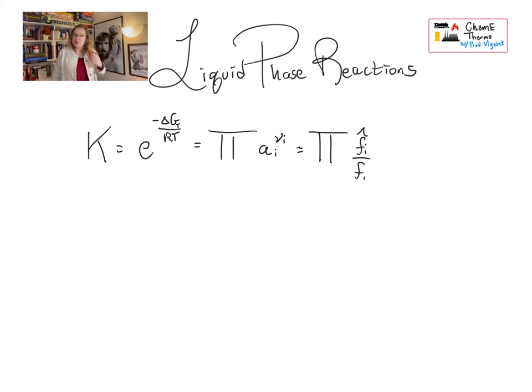K equilibrium, same as it's been before, e to the negative delta G over RT, and remember we've adjusted that delta G for temperatures. And it's equal to the product of all of the activities raised to the stoichiometric coefficient, which is the same thing as saying the product of all the fugacities raised to the stoichiometric coefficient.